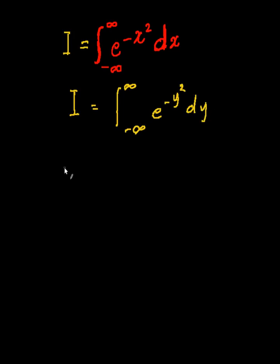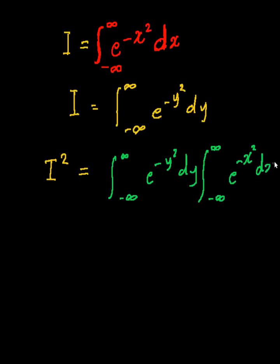So yes, they're exactly the same integral, but just bear with me for now. So what I'm going to really say is that I squared is equal to the integral of, so I'm going to rewrite this again, e to the minus y squared dy times the integral from infinity to negative infinity of e to the minus x squared dx. So the reason that I'm going to write this is because I can take this e to the minus y squared inside this integral.